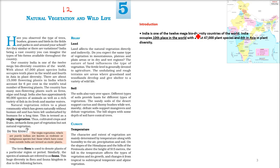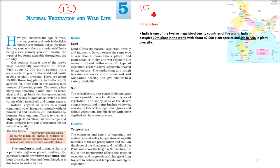Biodiversity means biology is diverse — we have different kinds of plants and animals. Because of the diversity of animals, say if in some place you get deer along with ox, serpents, and lions, that is biodiversity. India occupies 10th place in the world with about 47,000 plant species of different types.